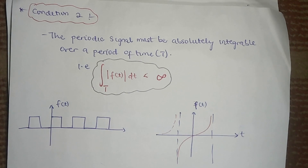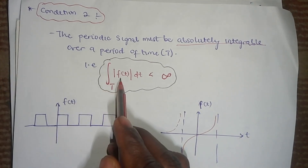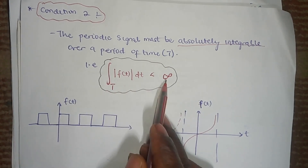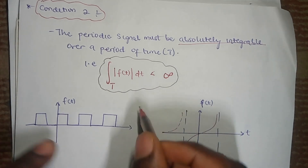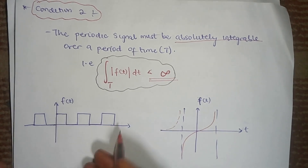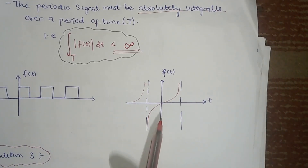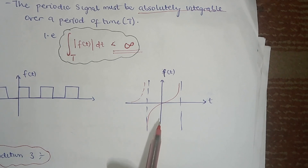Let's look at the second condition. The second condition says the periodic signal should be absolutely integrable over a period of time. The function f(t) must be absolutely integrable over a period of time and has to be less than infinity — that's the most important point. It's not like you can just be integrating to infinity; it has to be integrable over a range of period of time.